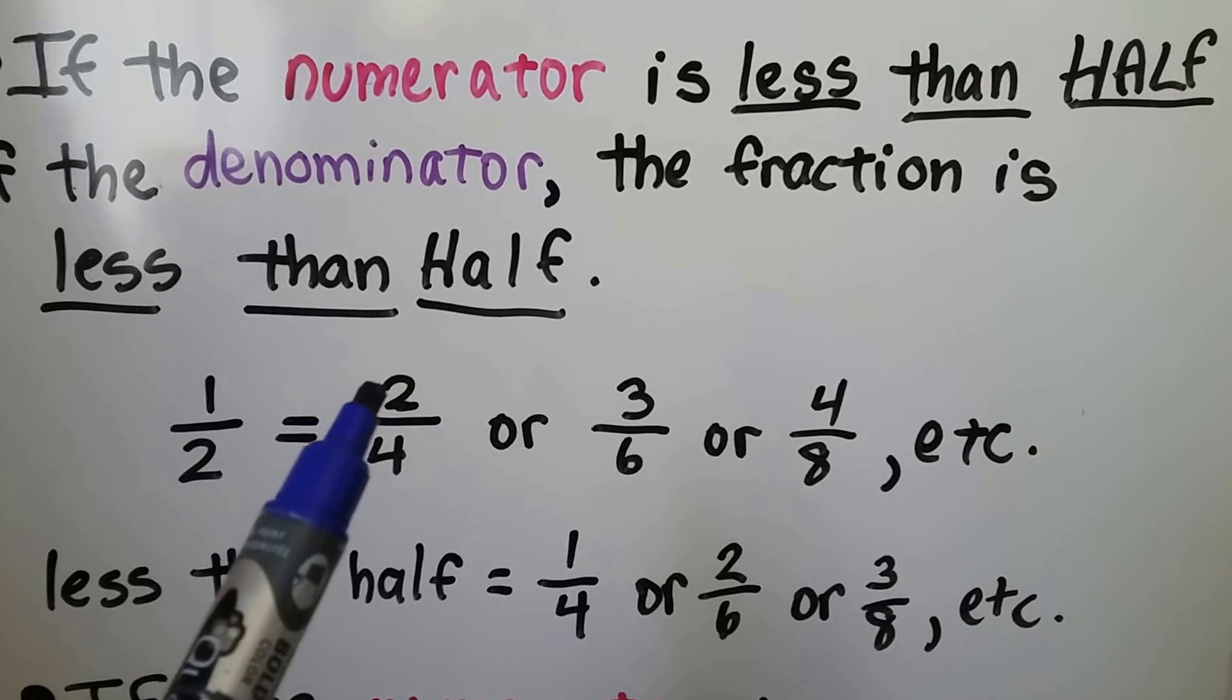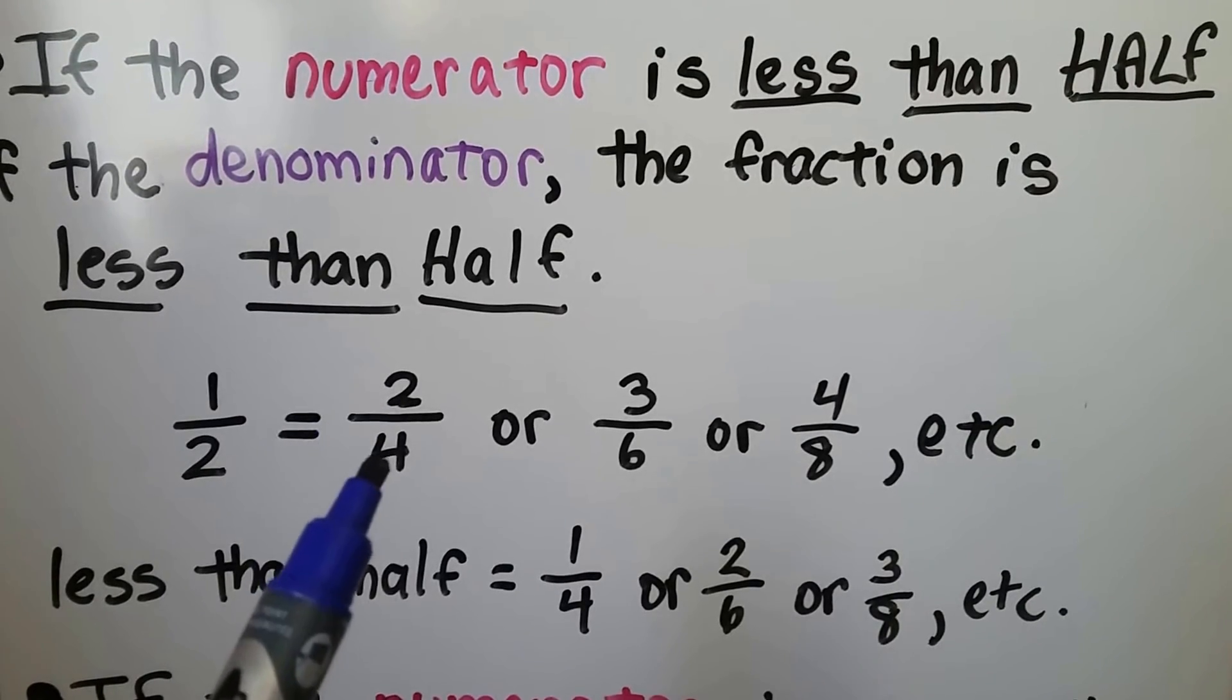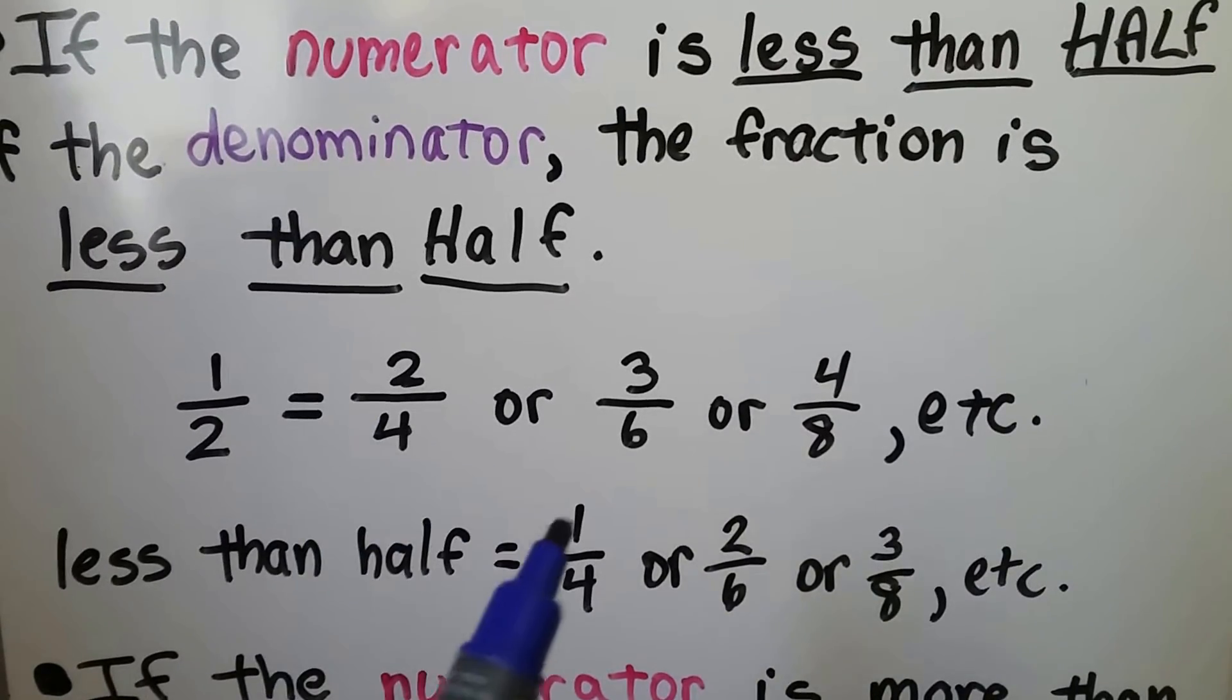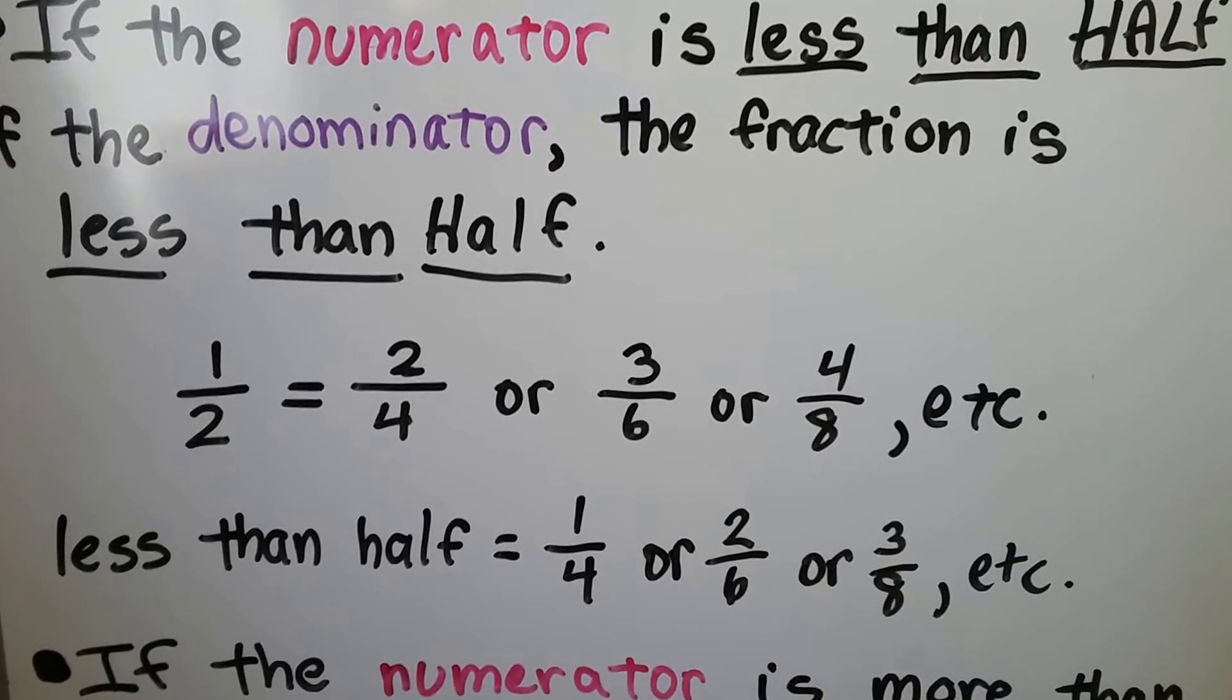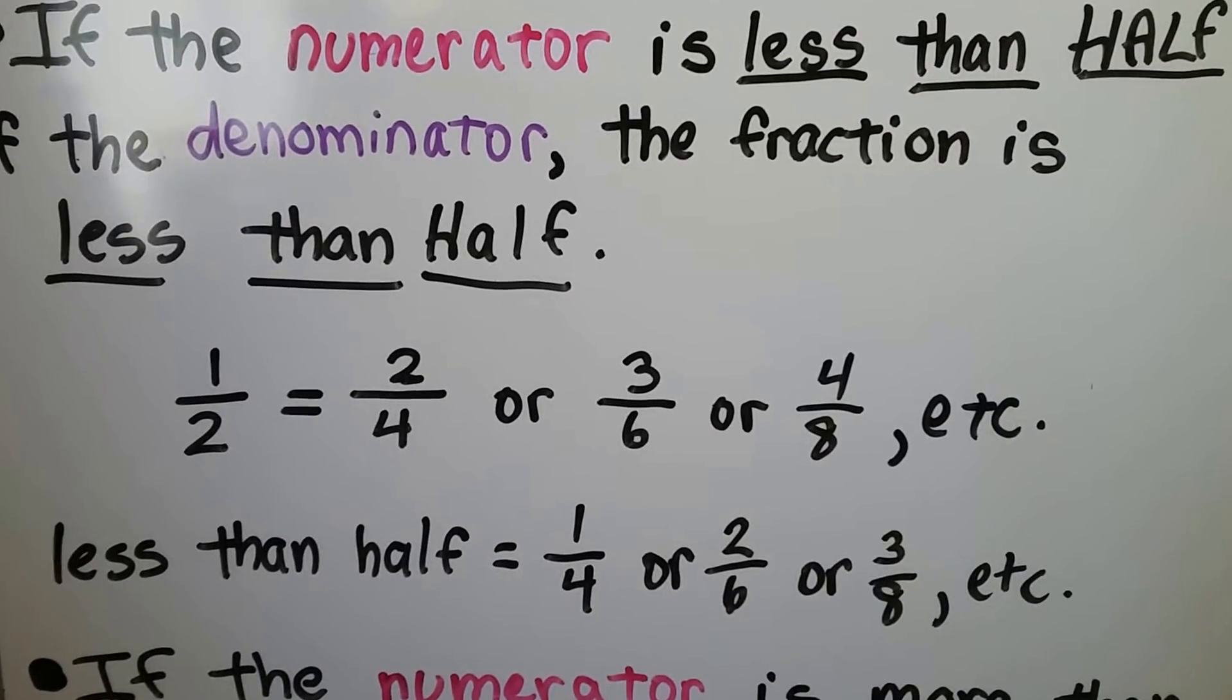If the numerator is less than half of the denominator, like instead of 2 fourths it's 1 fourth, then we would round it down to 0.